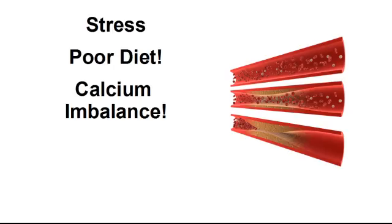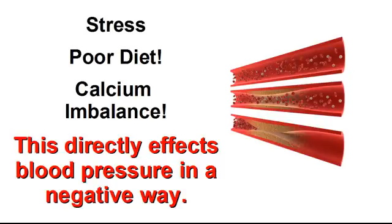Add stress, a poor diet, and a calcium imbalance, and you accelerate poor cardiovascular health and high blood pressure. Stress creates tension in the muscle groups, which causes capillary beds to constrict, increasing the resistance to blood flow and causing your diastolic blood pressure to increase, which negatively affects your systolic blood pressure. A poor diet can limit the vital nutrients your endothelium needs to repair itself and properly create nitric oxide. A calcium imbalance can move calcium out of your bones and into your vascular system, leading to the calcification of endothelium cells and hardening of the arteries, which directly affects blood pressure in a negative way.